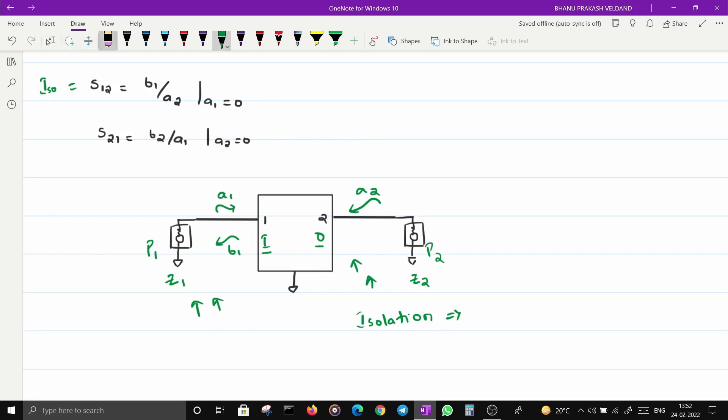Now let's look at S21. S21 is B2/A1—the energy going into port two because of the excitation, incident wave A1 from port one. Can we call it insertion loss? The meaning is the loss that occurred because of this network that is inserted between these two ports.